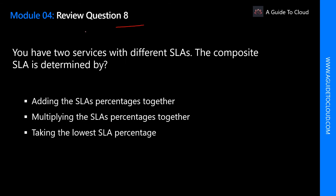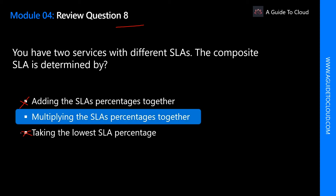You have two services with different SLAs — the composite SLA is determined by which method? Adding the SLA percentages together is not correct. Taking the lowest SLA percentage is also not correct. The correct answer is to multiply the SLAs together. To determine a composite SLA, you multiply the individual SLAs together.